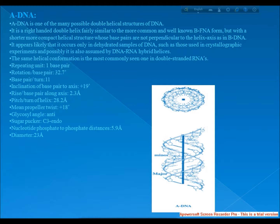The same helical conformation is the most commonly seen in double-stranded RNA. Repeating unit: one base pair. Rotation per base pair: 32.7 degrees. Base pair per turn: 11. Inclination of base pair to axis: plus 19 degrees. Rise per base pair along axis: 2.3 angstroms. Pitch per turn of helix: 28.2 angstroms. Mean propeller twist: plus 18 degrees. Glycosyl angle: anti. Sugar pucker: C3-endo. Nucleotide phosphate to phosphate distances: 5.9 angstroms. Diameter: 23 angstroms.